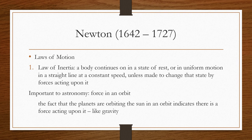To simplify the first law, a body maintains a constant velocity unless forces act upon it. For example, a ball will keep rolling until something stops it. We measure inertia based on an object's mass, or the amount of matter an object contains, and it does not depend on the environment. Its weight, the force that pulls it down, which is a measure of the external forces acting upon it, therefore depends on the environment. This is important to astronomy because force in an orbit. The fact that the planets are orbiting the sun in an orbit indicates there is a force acting upon it, like gravity.